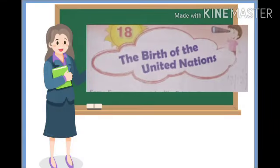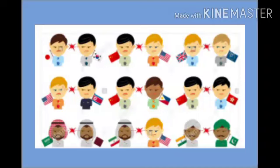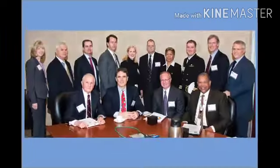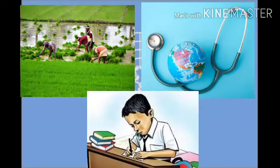Students, earlier in Chapter 18, you all learned about the birth of the United Nations. The United Nations is an international organization formed by the nations of the world to maintain peace and security. It tries to solve conflicts between nations. It provides scientific and technical expertise in various fields like agriculture, health, and education.